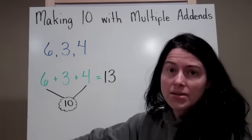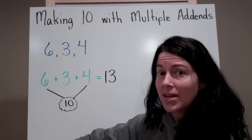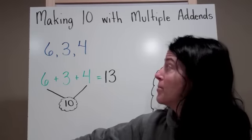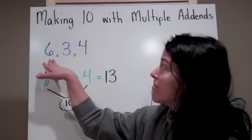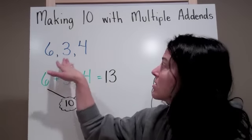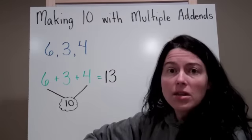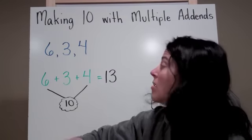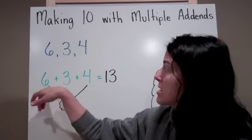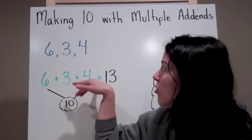Making 10 with multiple addends. Being able to make 10 really serves a lot of purposes. For example, I have these following addends: 6, 3, and 4. In a typical addition sentence, it would look like this: 6 plus 3 plus 4 equals.